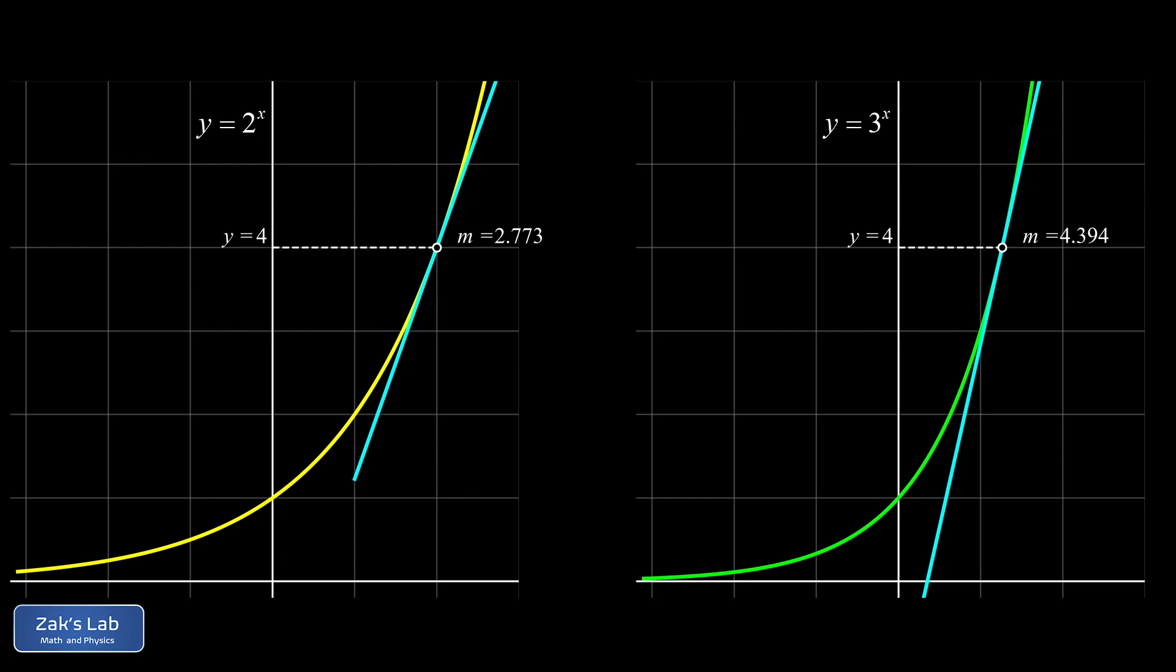So these two exponentials aren't going to solve our equation, but they are doing one thing right. The slope gets steeper as the y-coordinate increases, but each of them fails to satisfy the equation y' equals y. Our function on the left, y equals 2 to the x, has slopes that are always a little bit too shallow.